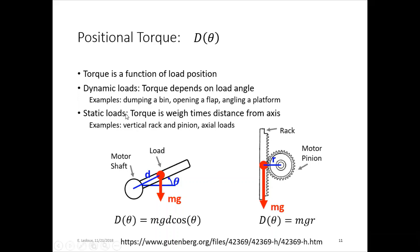So examples here for dynamic load, you're dumping a bin, opening a flap, angling a platform. You can see here motor torque. You just draw the free body diagram, find the torque. So this is going to be mass times gravity, which is the force, times that horizontal distance, which is d cosine θ.